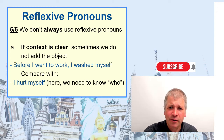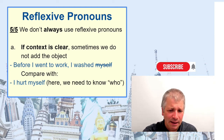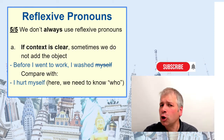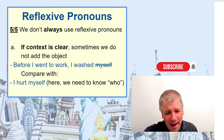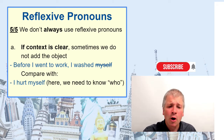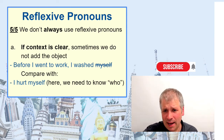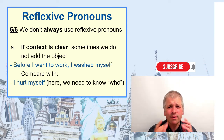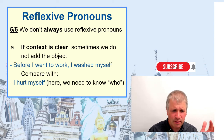Fifthly, it's also important to note we don't always use reflexive pronouns just because the object is the same as the subject. If the context is clear, sometimes we do not add the object at all — 'Before I went to work, I washed' — I don't have to say 'I washed myself' because the context is clear. But compare with 'I hurt myself' — here we really need to know who is being spoken about. If we just said 'I hurt,' it's not clear whether I hurt someone else or whether a part of my body is hurting. So if the context is clear, we don't always have to add it; if the context is not clear, then we should.